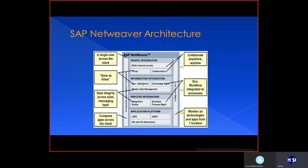The three major issues addressed were process integration, information integration, and people integration. They also introduced Java for coding in Netweaver — previously only ABAP was available. They introduced process integration, in which XI (Exchange Infrastructure) was the initial module. They also had BPM — Business Process Management. Later, they combined everything into a single module called process integration.